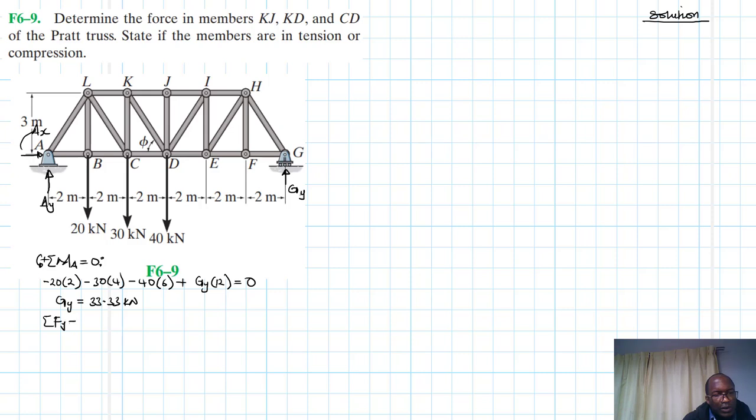Then we have summation of forces in the Y going up as our reference. So we have AY minus 20, minus 30, minus 40, plus GY equal to zero. We just calculated what GY is so we can replace it. And once we do so, then we'll find AY is just going to be equal to minus 20, minus 30, minus 40, plus 33.33. So AY becomes equal to 56.67 kilonewtons.